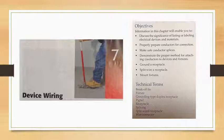The objectives are to discuss the significance of listing or labeling electrical devices and materials, properly prepare conductors for connection, make safe conductor appliances, demonstrate the proper method for attaching conductors to devices and fixtures, ground a receptacle, split wire a receptacle, and mount fixtures.